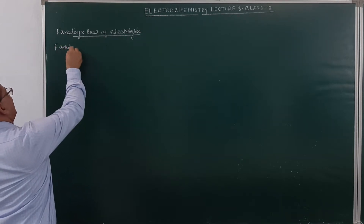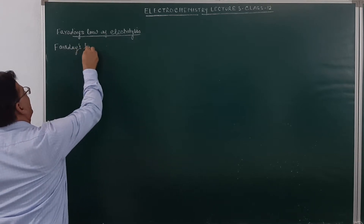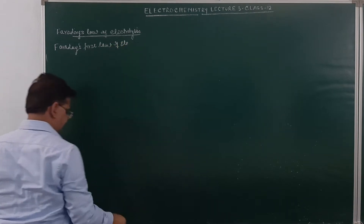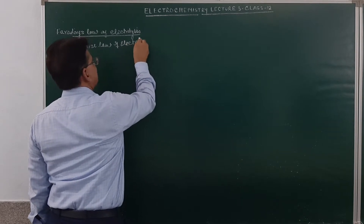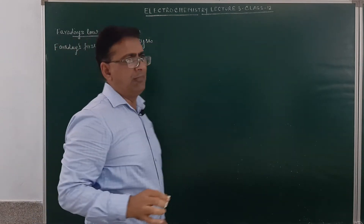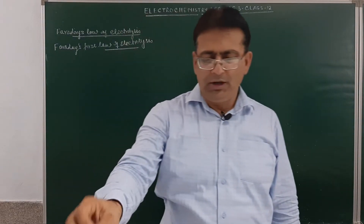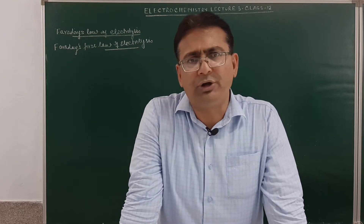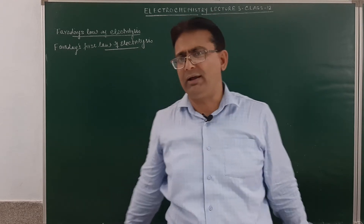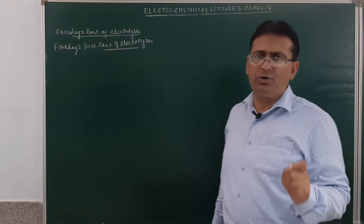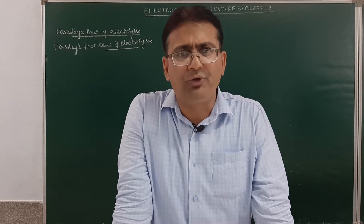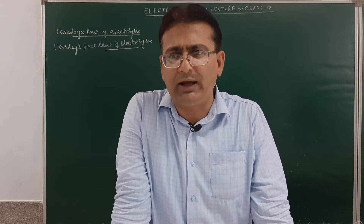Faraday's first law of electrolysis: According to this law, the amount of substance deposited on the electrode during electrolysis is directly proportional to the coulombs of charge passed through the molten electrolyte or the electrolytic solution in the electrolytic cell.